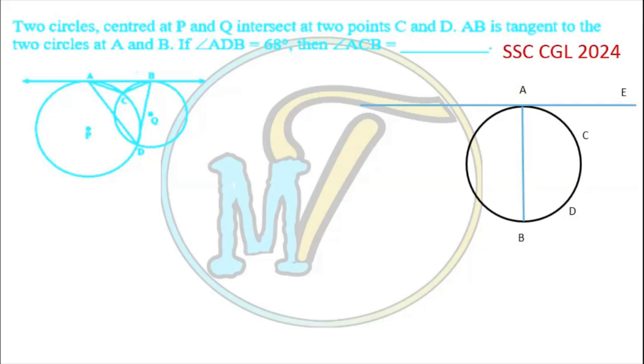First of all, let us assume such a figure where AE is a tangent to a circle, where AB is the diameter. Now as we all know that radius is perpendicular to a tangent of that circle, so diameter will also be perpendicular to that tangent.